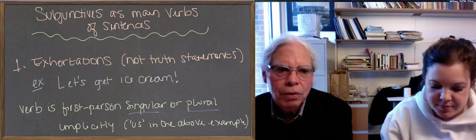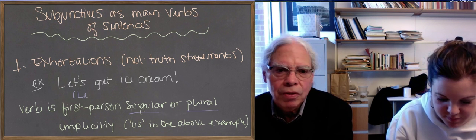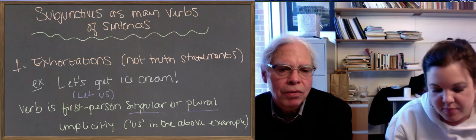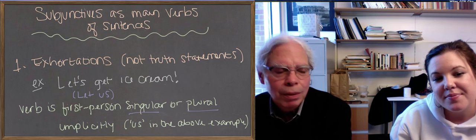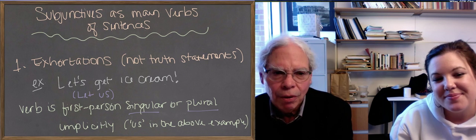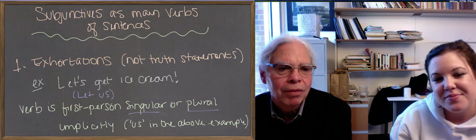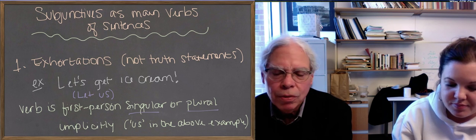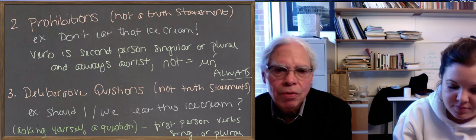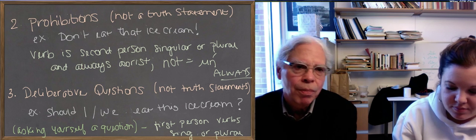In Greek, you put the verb in such a sentence in the subjunctive, in this case, it's going to be an aorist subjunctive. It's let's be getting ice cream, to be literal minded, if it's going to be a present subjunctive. That's one type of sentence in which you'd use a subjunctive. You're not stating a truth, you're urging people to do something.